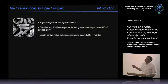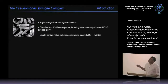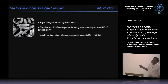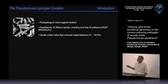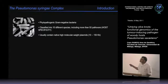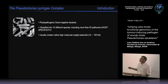The causal agent, Pseudomonas savastanoi, belongs to the so-called Pseudomonas syringae complex, which is formed by phytopathogenic gram-negative bacteria classified into ten different species including more than 50 pathovars. All these bacteria usually contain high molecular weight plasmids, most of them containing virulence factors that I will mention during my talk.